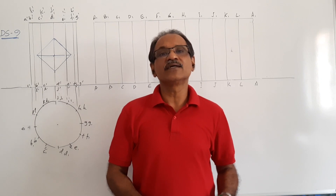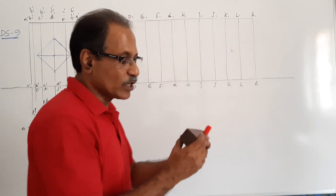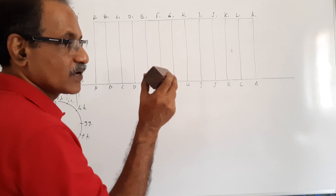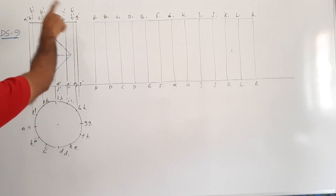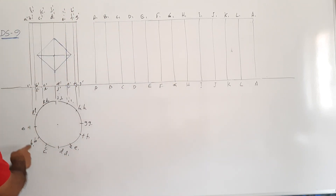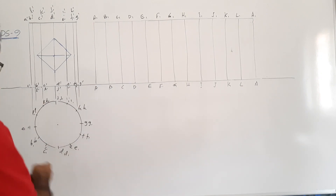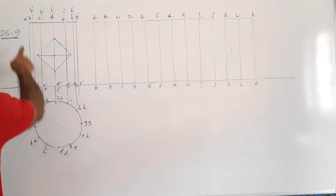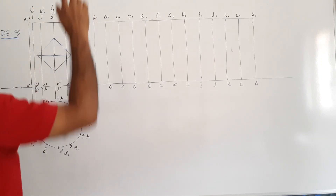A hole is drilled onto the cylinder. This is the plan of the cylinder and this is the elevation. The points of the base are labeled a, b, c, d up to l, and the points of the top are a1, b1, c1 up to l1, with a-dash, a1-dash, b-dash, b1-dash, c-dash, c1-dash and so on.